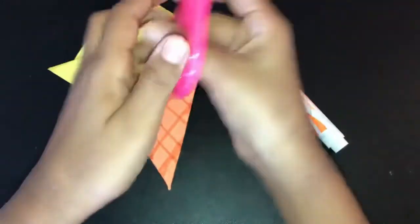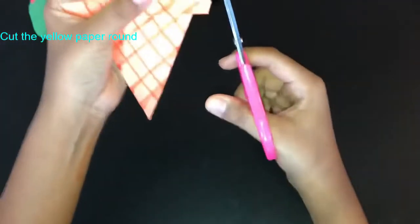Then we're going to need a scissor and cut the yellow paper round.